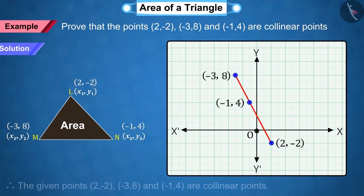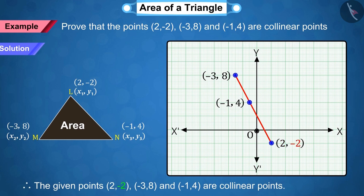Hence, the given points (2, -2), (-3, 8) and (-1, 4) are points on the same line. That is, they are collinear points.